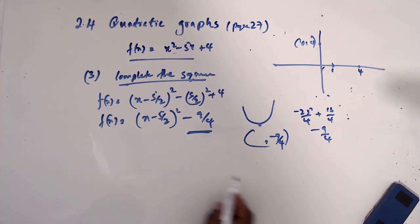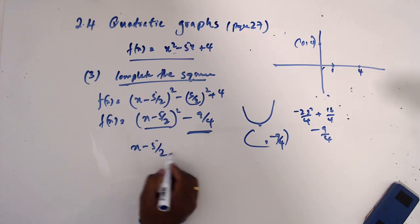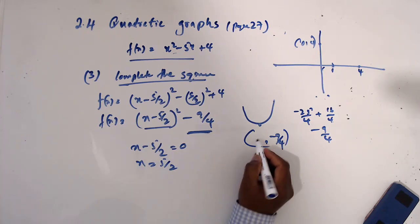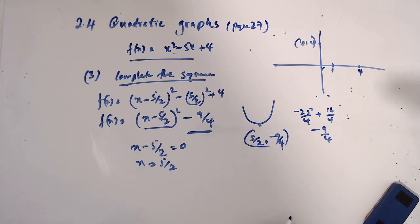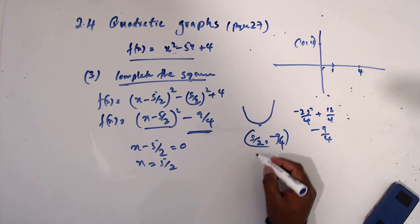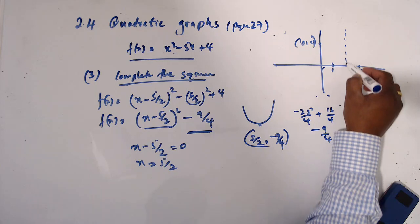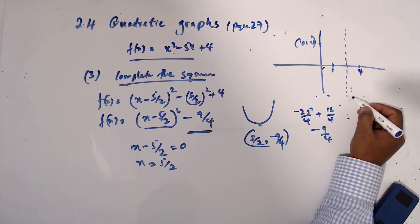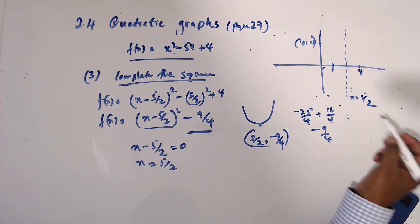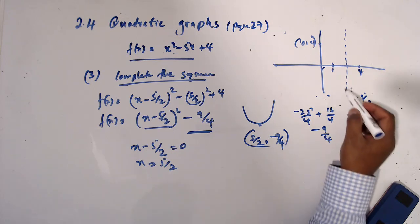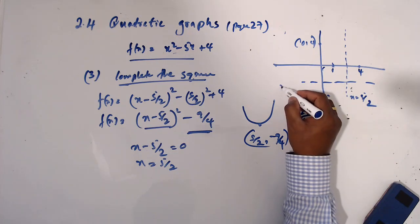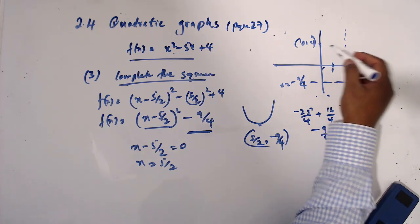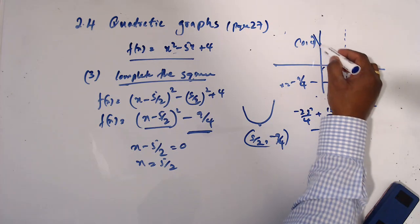Now how do you find x? So you want to make it equal to 0: x minus 5/2 equals 0, x equals 5/2. So this is 5/2, so it means 5/2 is 2.5. Yes, this is x equals 5/2 line, and this is y equals minus 9/4. So those two lines meet here, so then this is the turning point. So then we can draw this one.